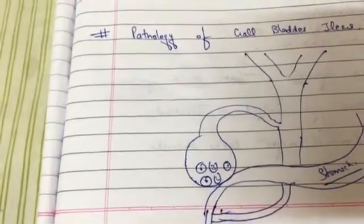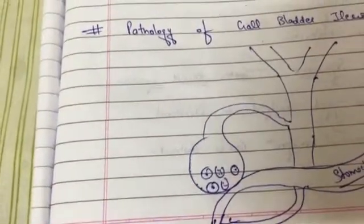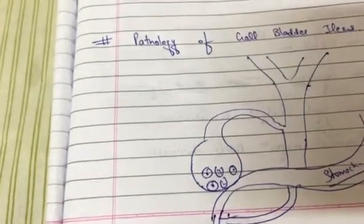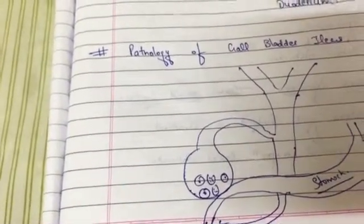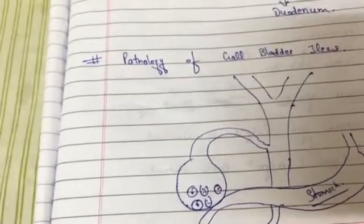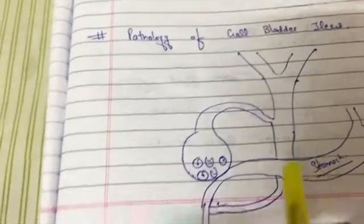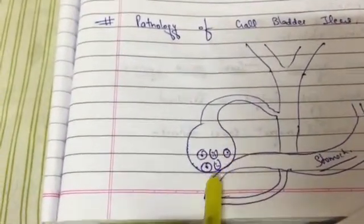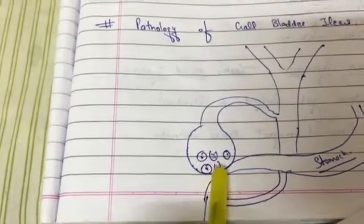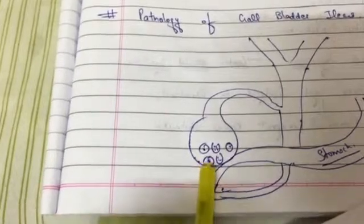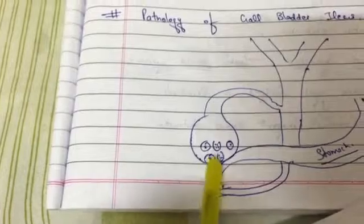You might wonder why the obstruction occurs in the ileum and not in the duodenum. That is because the ileum is the narrowest part of the gut, so the gallstone gets lodged there and causes obstruction. This fistula is mainly formed because of the inflammation of the gallbladder — the gallbladder gets inflamed, and pressure necrosis occurs.